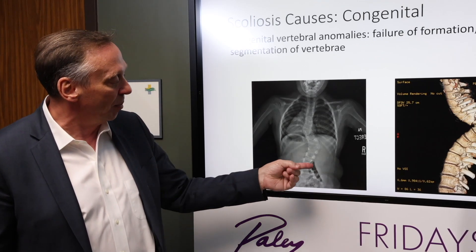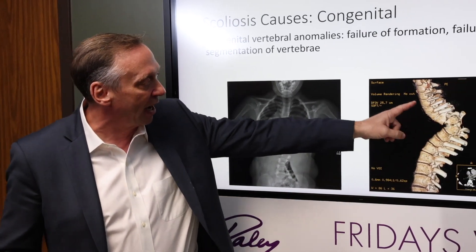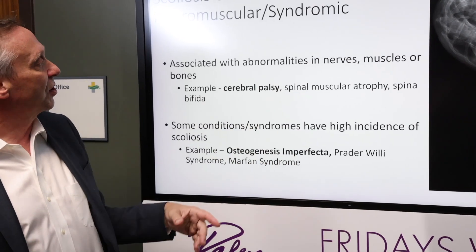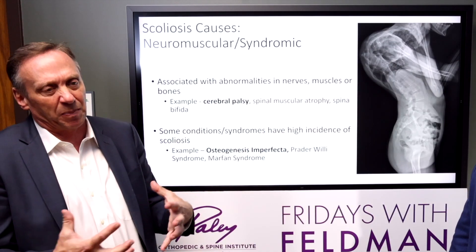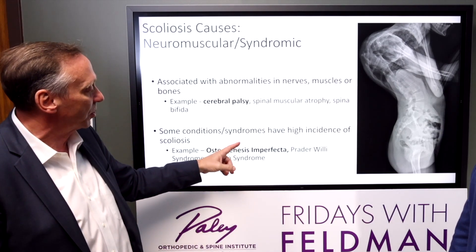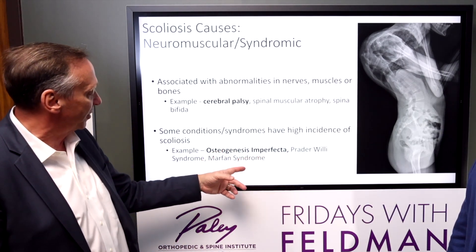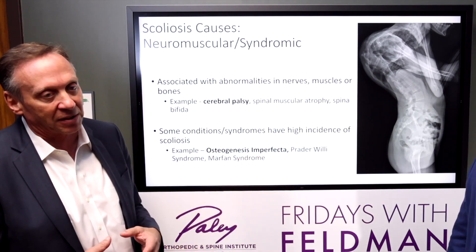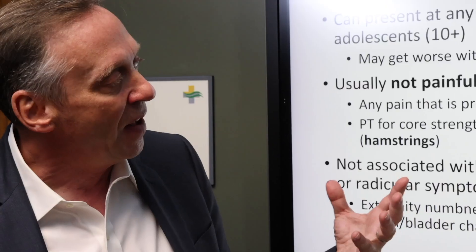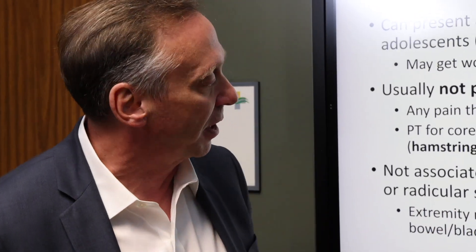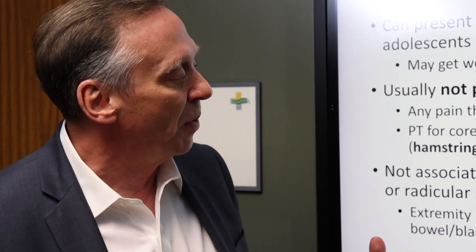So congenital means the building blocks are not okay. Then sometimes you have neuromuscular causes, where very spastic muscles cause the scoliosis. Prader-Willi, osteogenesis imperfecta, Marfan syndrome — all of those would be in that category, and they're pretty common in our practice. But the most common is we don't know why it's caused, and that's called idiopathic. I'm going to talk about some of the newer things about treatment and evaluation of this.